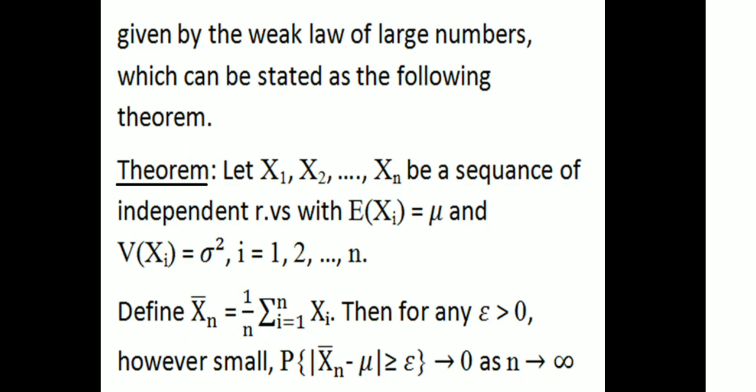Then we define Xn bar equal to (1/N) times the summation of Xi. Then, for any epsilon greater than 0, however small, the probability of |Xn bar minus mu| greater than or equal to epsilon tends to 0 as n tends to infinity.